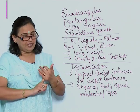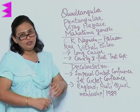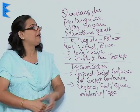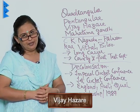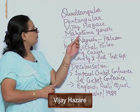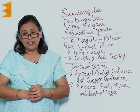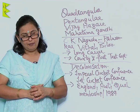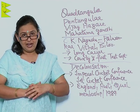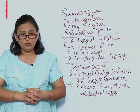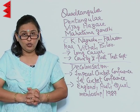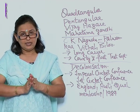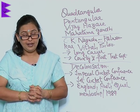From quadrangular it became pentagular — from four teams to five teams. The captain of the fifth team, known as 'the Rest,' was Vijay Hazare. Mahatma Gandhi criticized this pentagular cricket because he felt that national leaders were trying to unite India, while this cricket was divisive in nature.